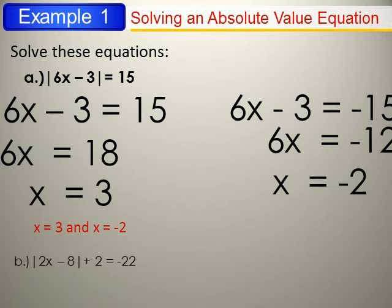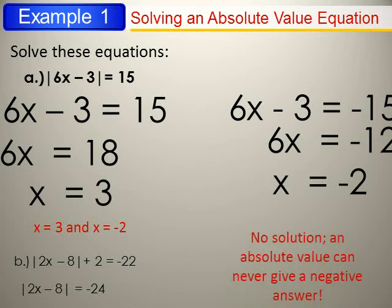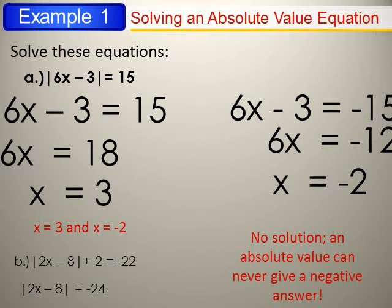Another example: |2x − 8| + 2 = −22. First, find the value of the absolute: it will be −22 − 2 = −24. There is no answer for a negative absolute value — no absolute value can output a negative number, so there is no solution.